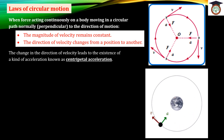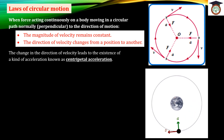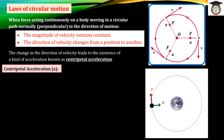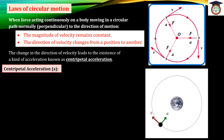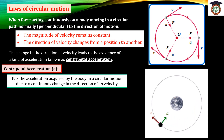When the object moves in a circular path, its direction changes from one moment to another — like the rotation of the Moon around the Earth in a circular path. The direction of velocity changes as time passes. The change in the direction of velocity leads to the existence of centripetal acceleration, which is the acceleration acquired by an object moving in a circular path due to the continuous change in the direction of velocity.